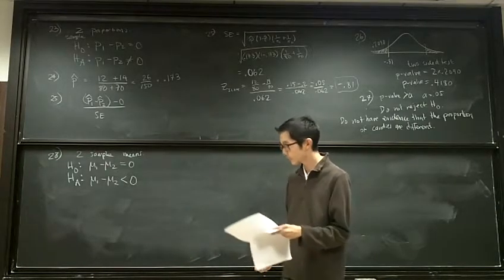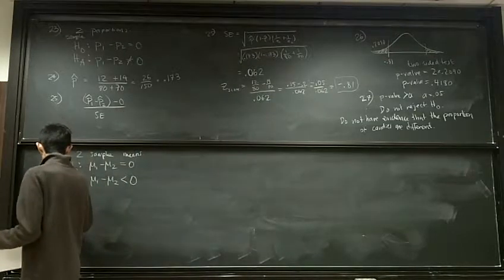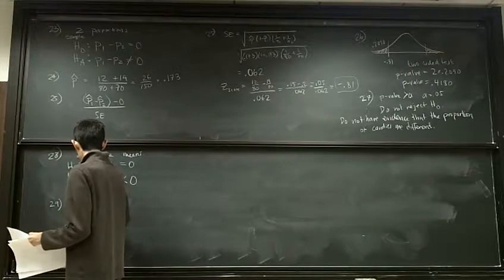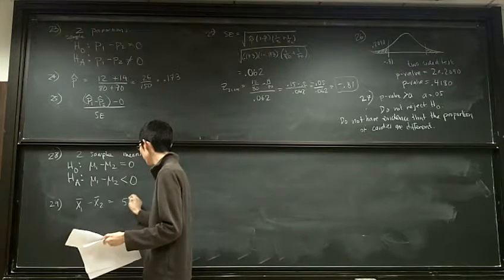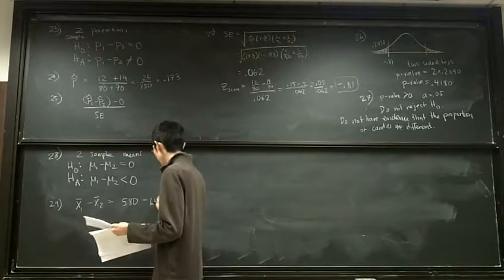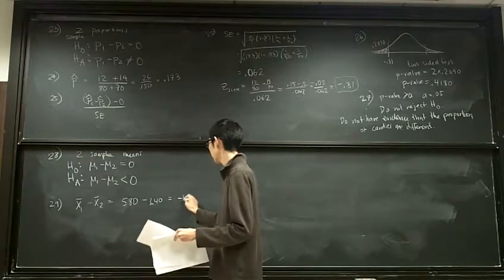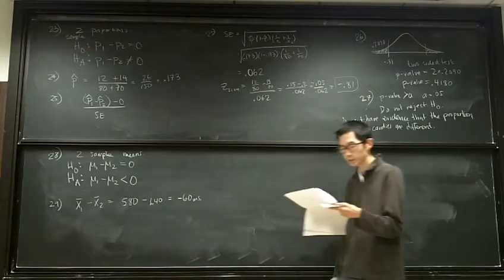What's the observed difference in means? Okay? What was the average reaction time for group one, and what's the average reaction time for group two? Okay? Yeah. 580 milliseconds for group one, minus 640 milliseconds for group two. So we have a difference of negative 60 milliseconds. That's our observed difference.